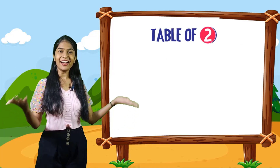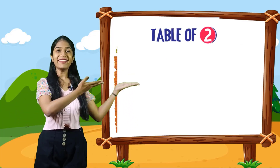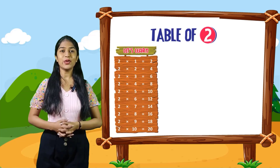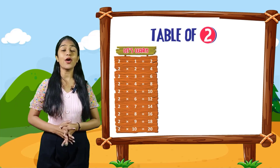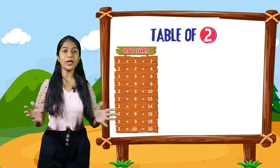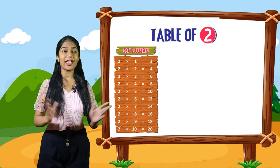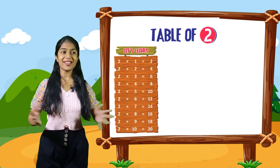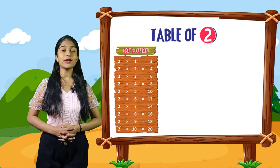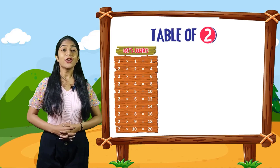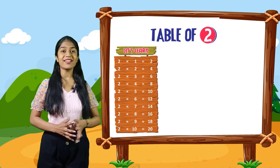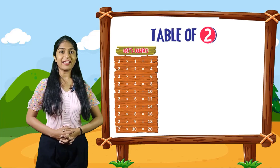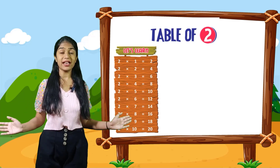Table of 2. So kids, let's start the table of 2. Now let's learn. 2 into 1 is equal to 2. 2 into 2 is equal to 4. 2 into 3 is equal to 6. 2 into 4 is equal to 8. 2 into 5 is equal to 10. 2 into 6 is equal to 12. 2 into 7 is equal to 14. 2 into 8 is equal to 16. 2 into 9 is equal to 18. 2 into 10 is equal to 20.